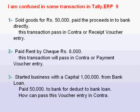First problem: Sold goods for $50,000 and paid the proceeds into the bank directly. This transaction — should it be passed in a contra or receipt voucher entry? He wants to know in which voucher he should pass this transaction, because the sale has been done and the proceeds go directly into the bank. He should pass this transaction in a receipt voucher instead of a contra voucher.